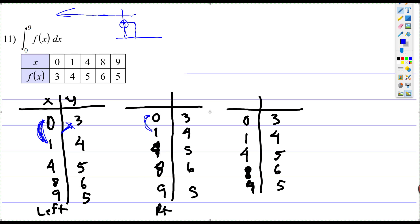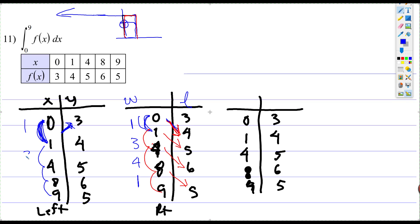For the right side, we would draw the rectangle up there like that. Between each pair of x-values you draw the rectangle at the right endpoint height. So the widths are: a width of 1, a width of 3, a width of 4, and a width of 1 — back to 1. And these are the heights.